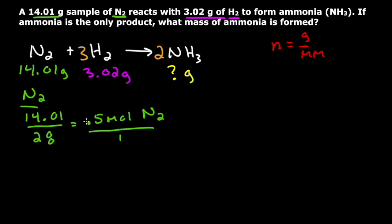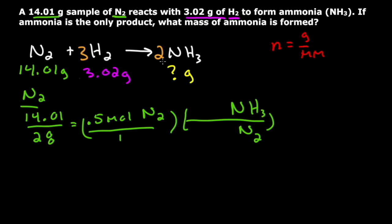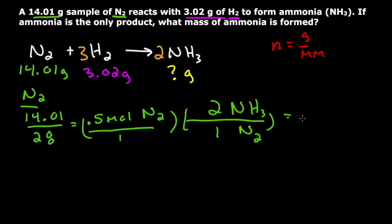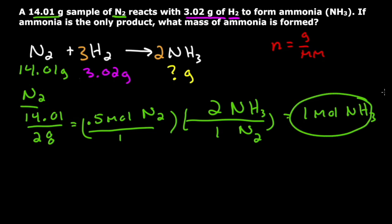Now I'm going to go from this reactant to the product, figuring out how much NH3 it can make. I'll put N2 on the bottom and NH3 on top. The balanced equation has a coefficient of 1 for N2 and 2 for NH3, so I put a 1 on the bottom and a 2 on top. The N2 units cancel, and I get 0.5 times 2 divided by 1, which equals 1 mole of NH3. So N2 can make 1 mole of NH3.